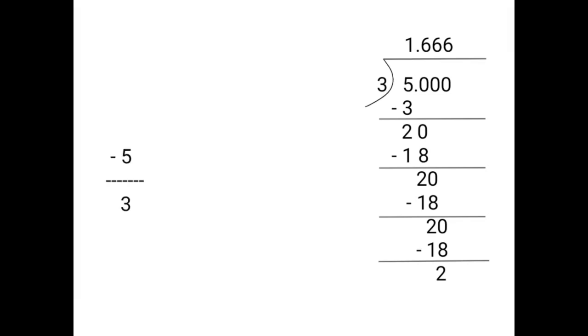The question was minus 5 upon 3, so on the quotient place it will become negative. If the question is given as negative, then on the quotient place you have to put the negative sign. On the quotient place, if the digits are repeating after the decimal point, you have to put a line on top of the numbers. If one digit is repeating after the decimal point, you have to put a dot. That is, minus 5 upon 3 is equal to minus 1.6 with a dot on top of 6.